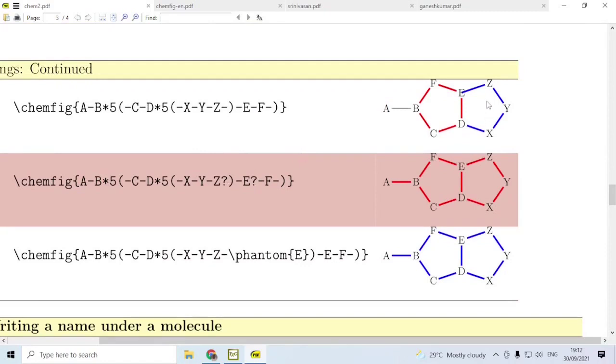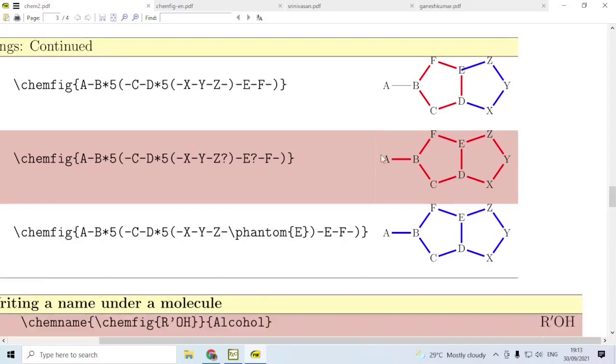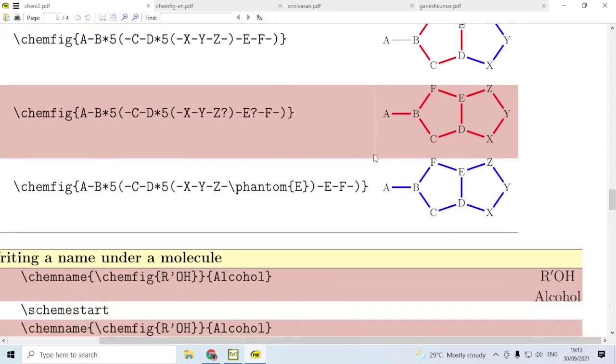First method is you put a hook at Z and another same hook at E. Then the hook at Z and the hook at E will see to that the bond is of correct length. Next method is, after Z, instead of putting the hook, you can use single bond phantom E. This also produces the correct result.